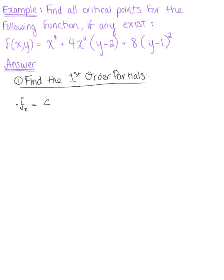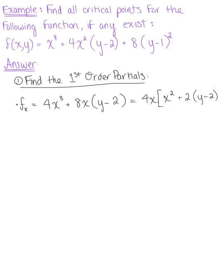So I have 4x cubed plus 8x multiplied by (y minus 2). Now we just need to simplify. We can factor out a greatest common factor of 4x, giving us 4x multiplied by (x squared plus 2) multiplied by (y minus 2). I'll leave my partial derivative in that factored form.